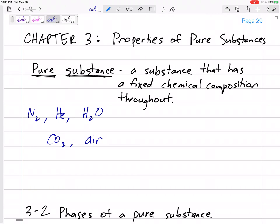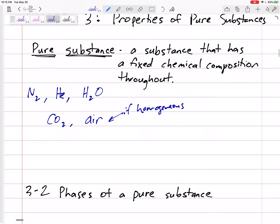Air could be a pure substance if it's homogeneous. Something that is homogeneous if it has a fixed chemical composition throughout, so it could be a mixture like air. But a lot of the times we're looking at H2O, we're looking at air, even like a refrigerant, refrigerant 134A we'll look at a lot. Those are pure substances.